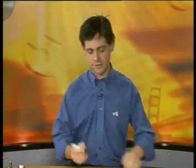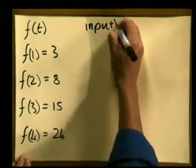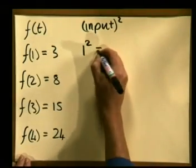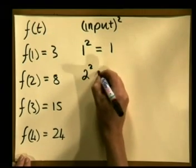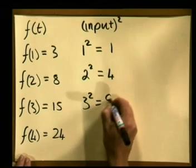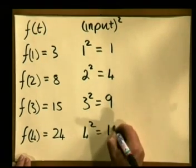The fact that this is a quadratic function means I need to square the input values to find the output values. So: 1² = 1, 2² = 4, 3² = 9, and 4² = 16.